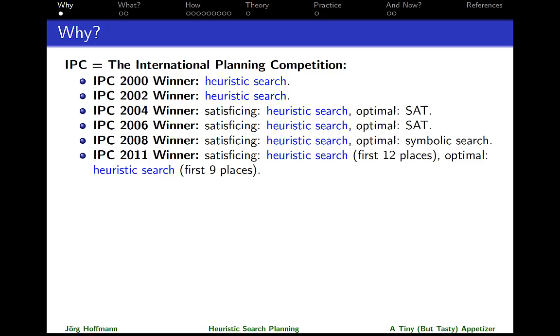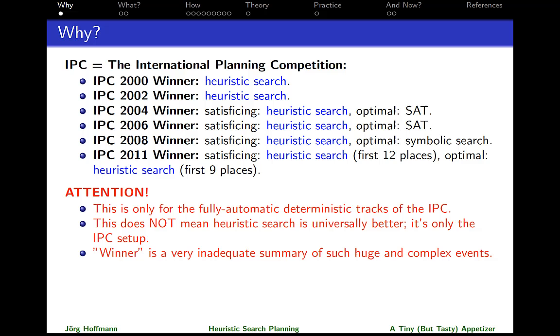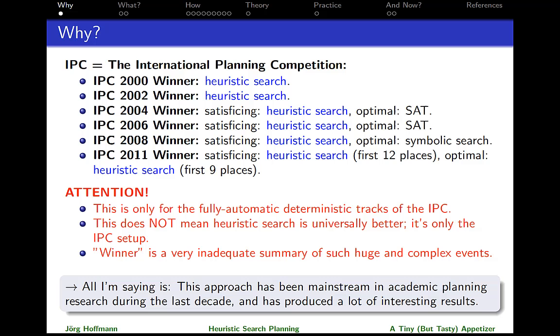Now, that might seem very impressive, and it is impressive. However, you should not take this too seriously. First, it's only one part of the IPC, namely the fully automatic deterministic part. There are other parts as well, although this one here is the biggest one. Second, winning the competition doesn't mean you win live. You're just the best planner in one particular setup and according to one particular winning criterion. If you have an actual application, the winner might be different. Finally, saying the word winner already is not really adequate, because these are hugely complex events, very complicated experiments, lots of data, and giving you just a single bit somebody won is not a very adequate summary. So really, all I'm saying here is that these results should give us sufficient motivation to consider this approach for the 12 minutes of this lecture.